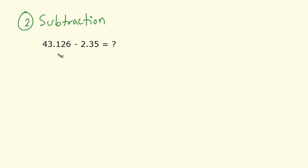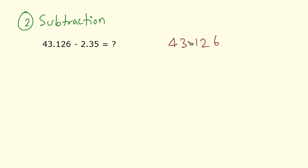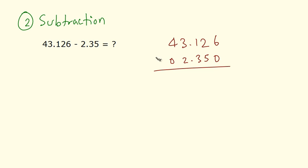Now, let us perform subtraction on these numbers. I would do it the same way — write the first number above: 43.126, and write the second number below it. I will make sure that the decimal points remain aligned. On the left hand side I have 2, on the right hand side I have 3 and 5. The blank spaces can be filled in with zeros, and I have to perform subtraction on these two numbers.